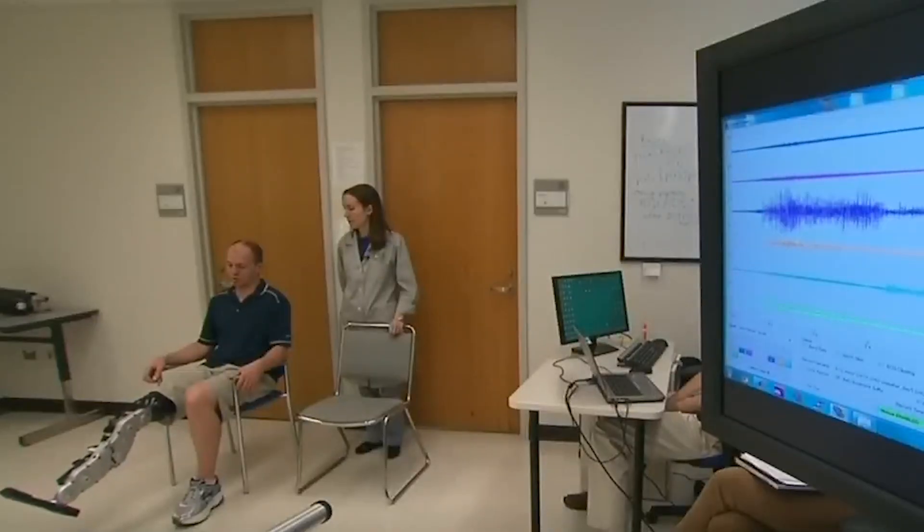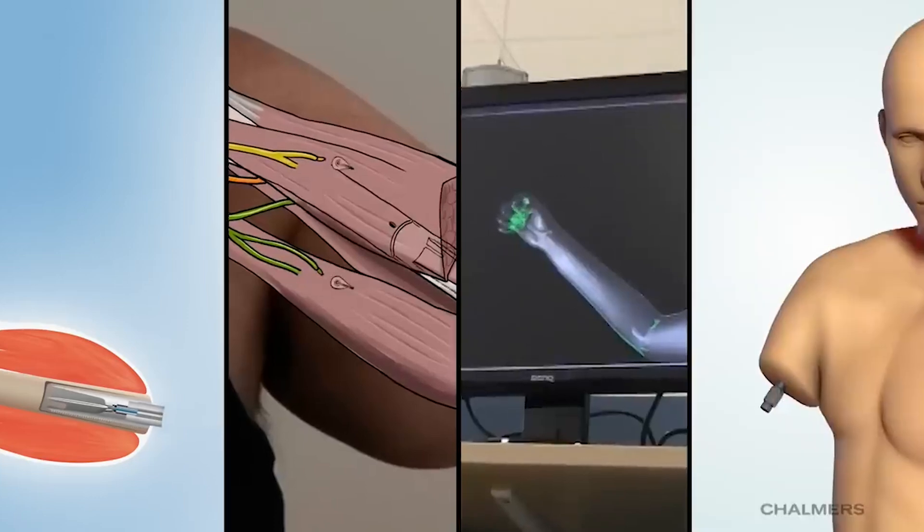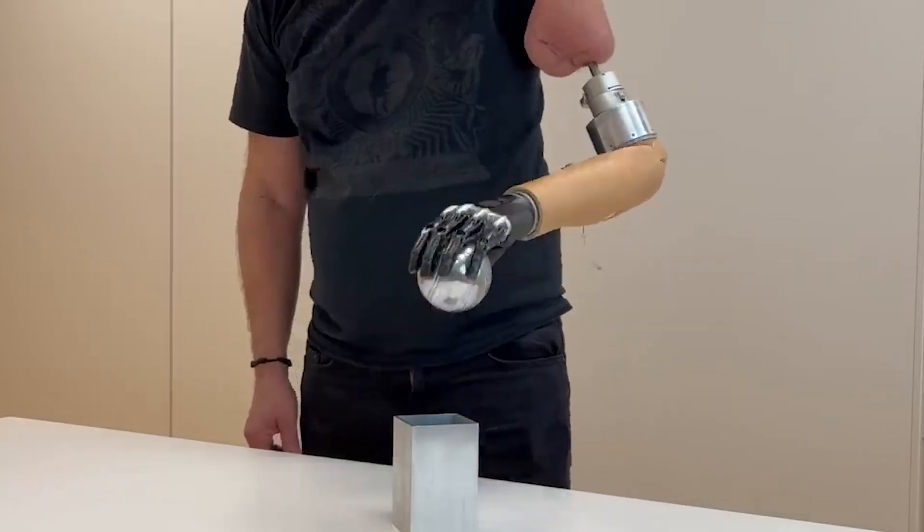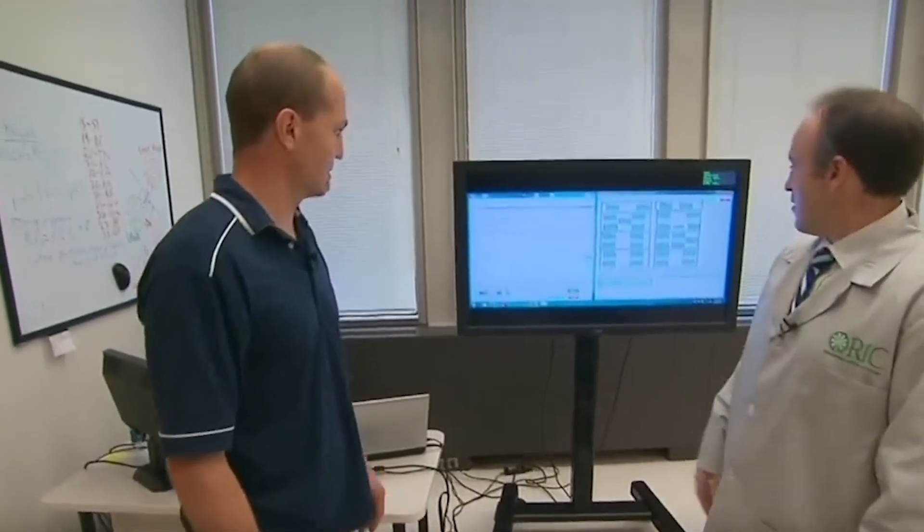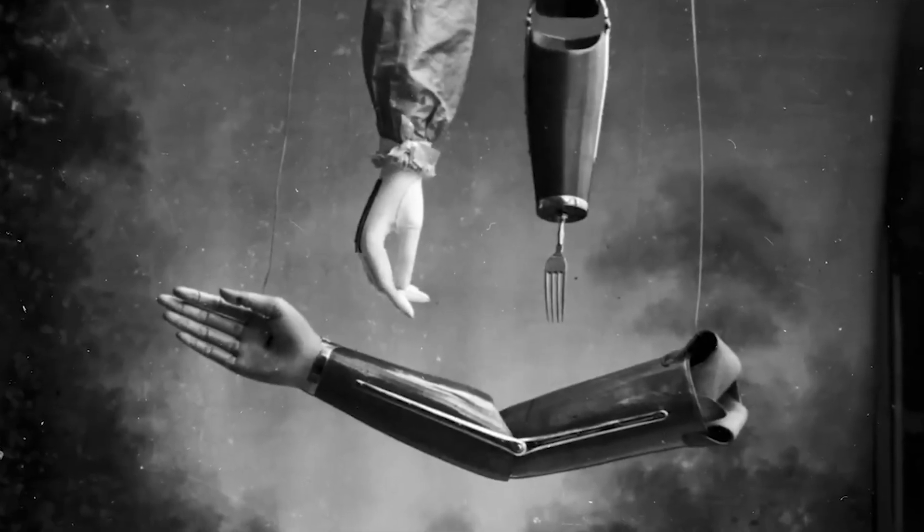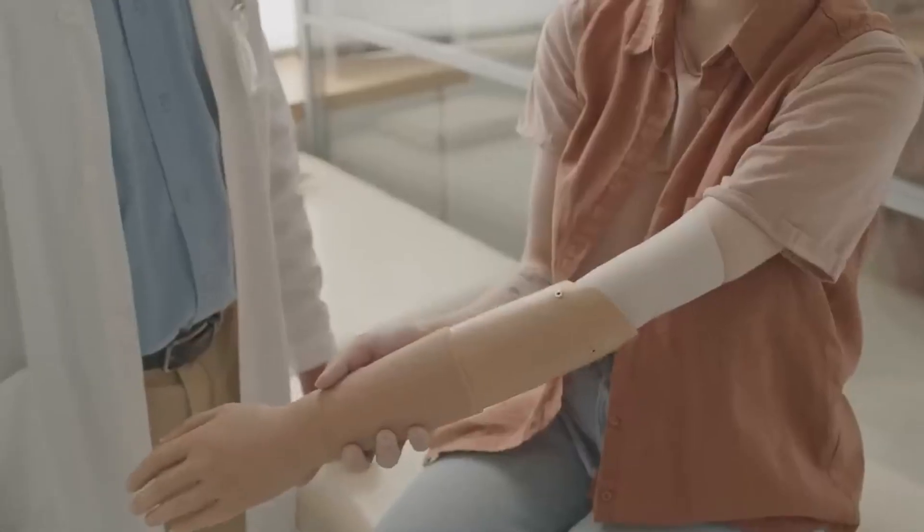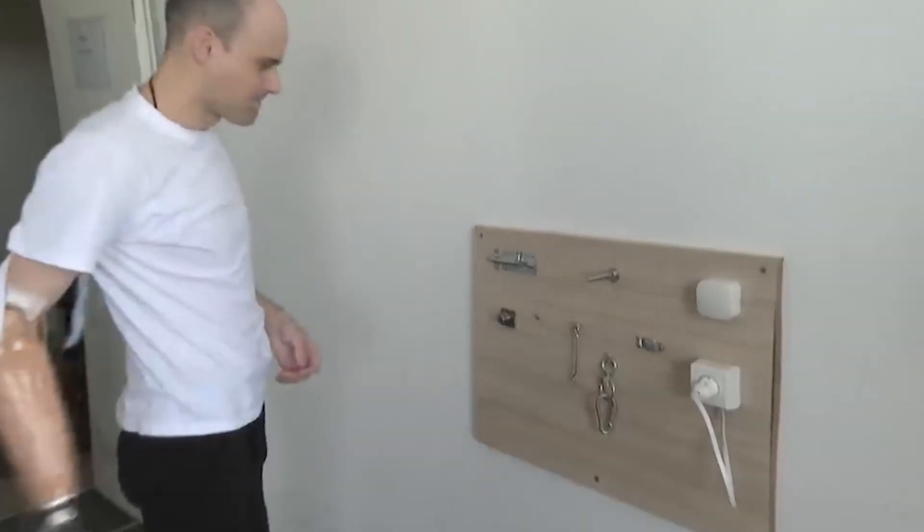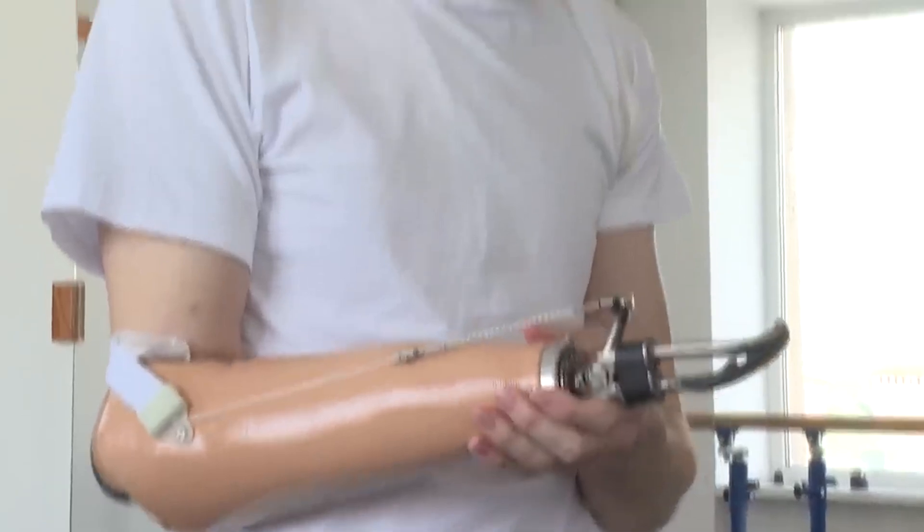This allows users to feel pressure, texture, and even temperature. Companies like Open Bionics and DARPA are developing artificial limbs that connect with the nervous system, making it possible for users to control the prosthetics with their minds. Imagine wearing a prosthetic hand that lets you feel the warmth of a coffee mug or the softness of fabric. This sensory integration provides a sense of connection and control that was once impossible. These advancements are not only transformative for amputees, but could one day be available to enhance human capabilities, allowing us to push past natural physical limits with the assistance of high-functioning prosthetics.